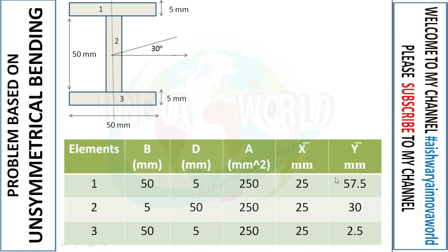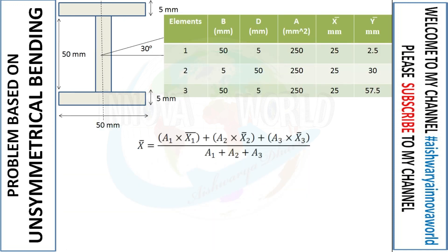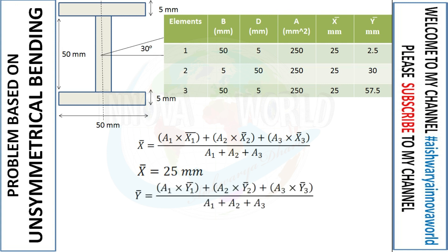Half of 55 is 2.5, so from the center to the top flange gives 2.5 plus 55 equals 57.5. For element two, half of 50 gives 25, but adding the bottom flange thickness of 5 gives 25 plus 5 equals 30. For element three, half of 5 gives 2.5. Applying the x̄ and ȳ formulas and substituting all values, we get x̄ = 25 and the centroid ȳ of the entire I-section.